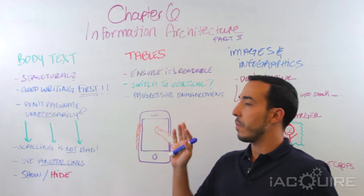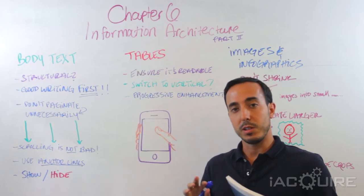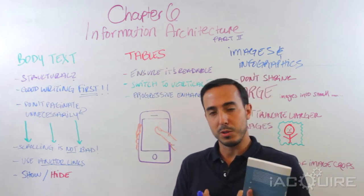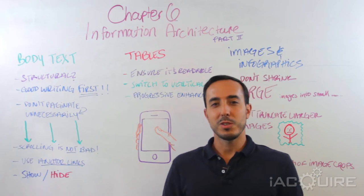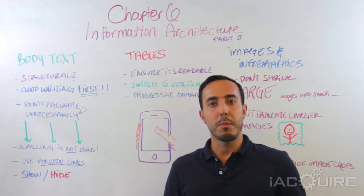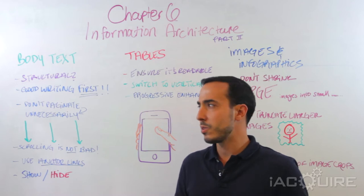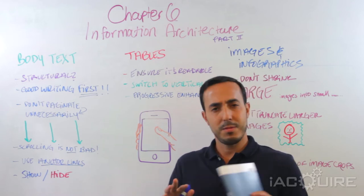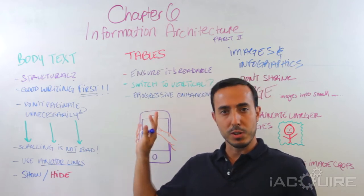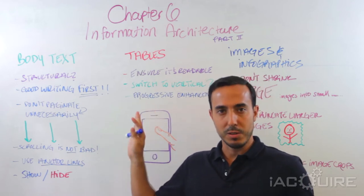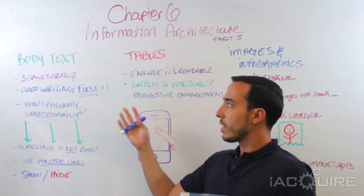This section of the information architecture I think is a little bit more fun than the previous one, in my personal opinion. The last one was all kind of structural — a lot of talk about page titles, descriptions, and forms, very boring stuff. This section talks about body text and images, the fun stuff.